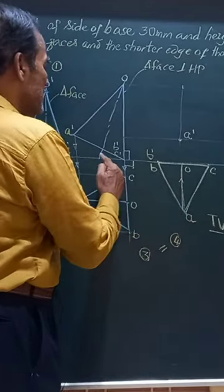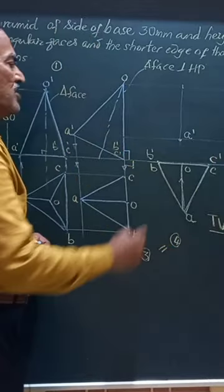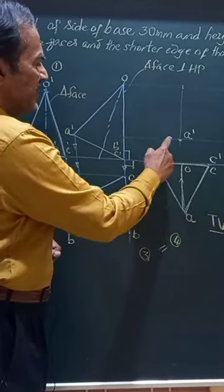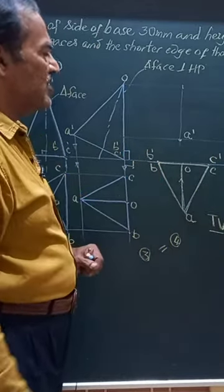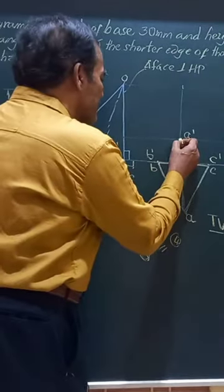Similarly, draw a vertical line from C, horizontal line from C. This will become C dash. So if we join A dash, B dash, and C dash, we get the base of the solid in the final frame view.